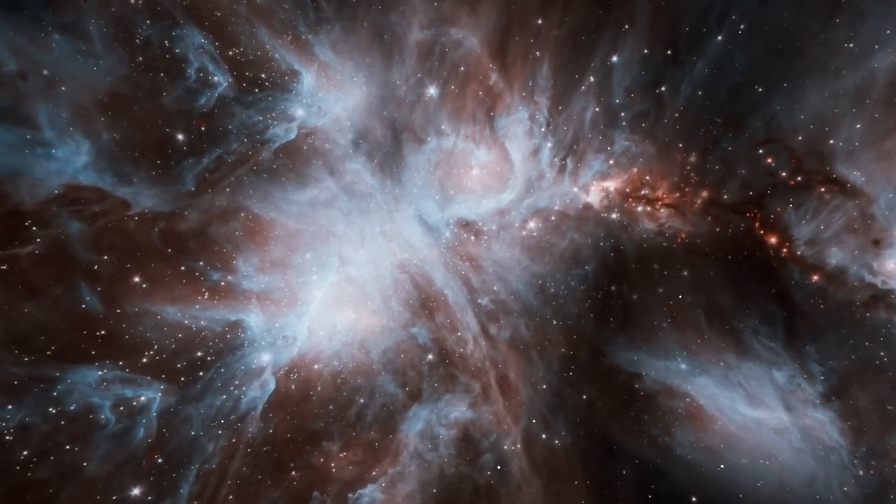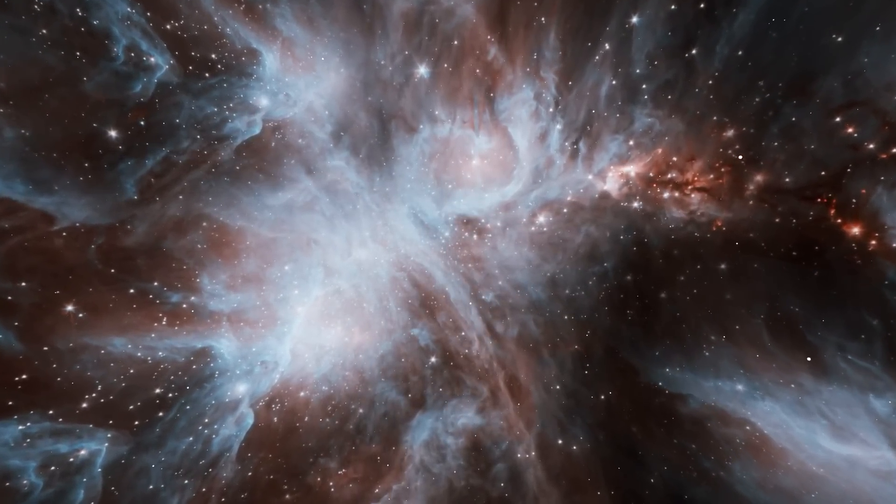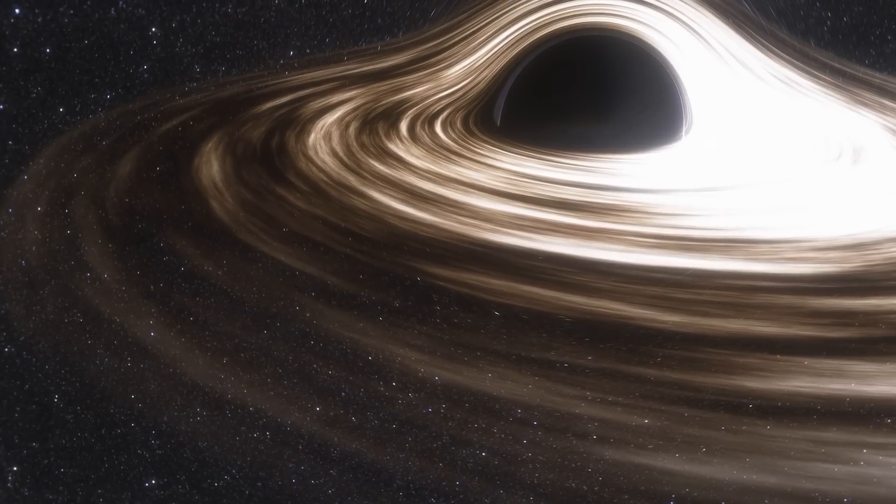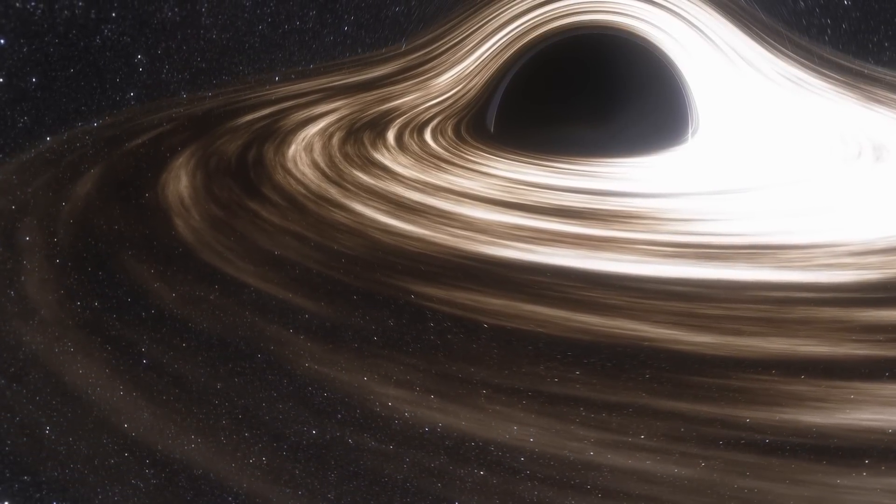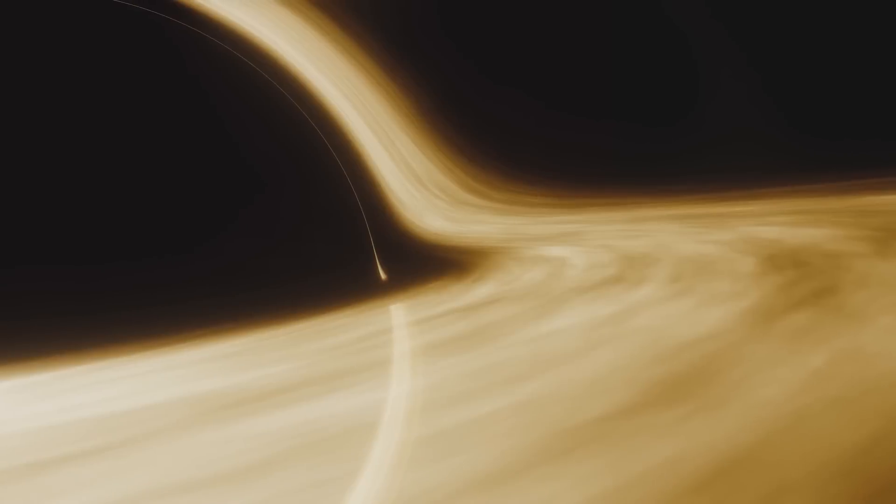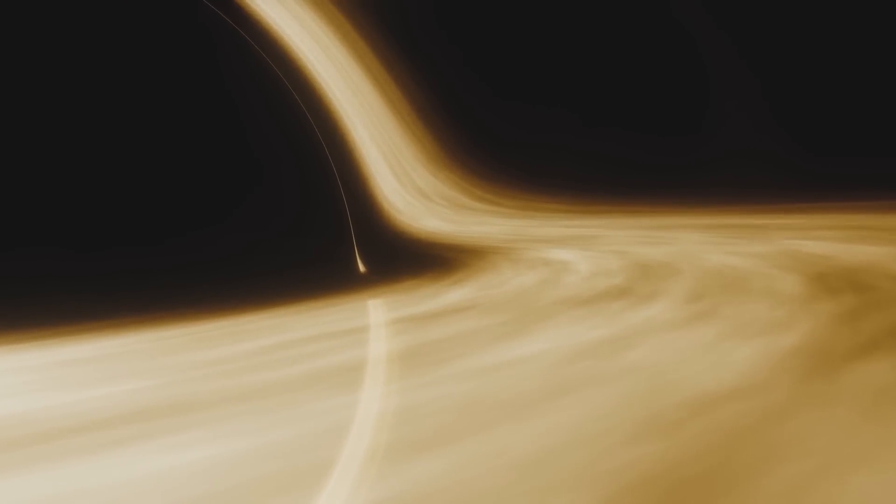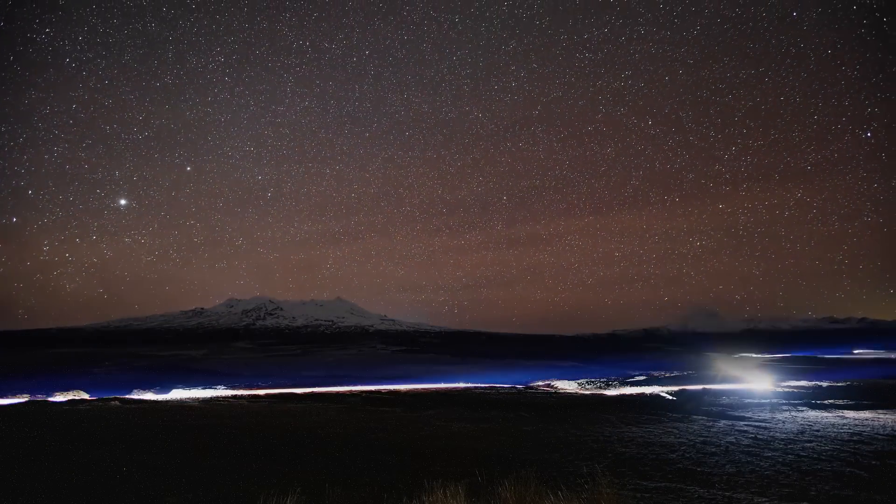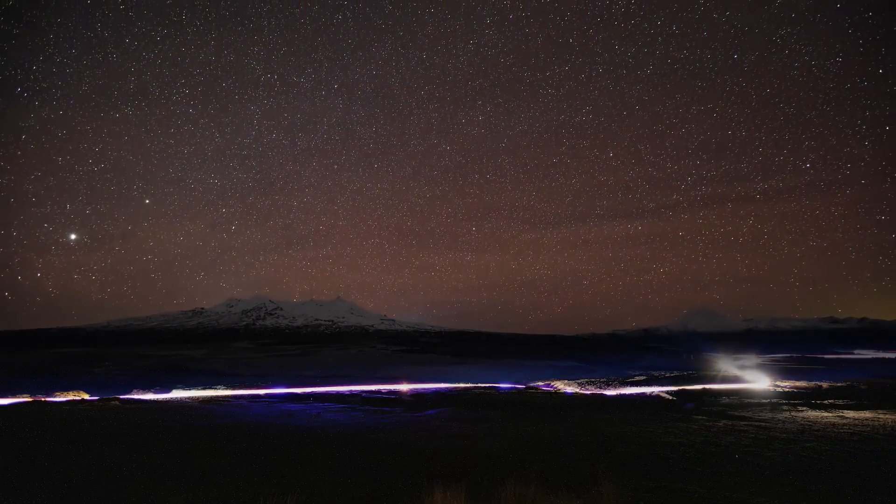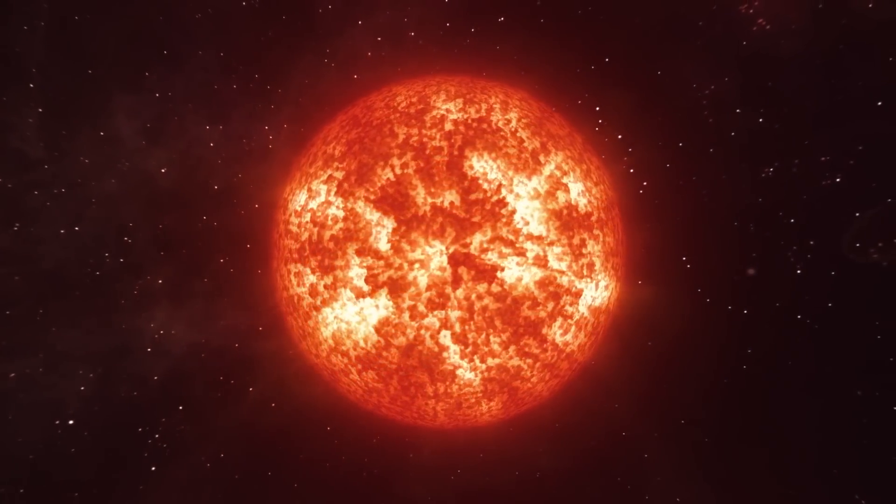Researchers have proposed two new theories to explain the high energy output of ancient galaxies. One theory is that they could have a supermassive black hole at their center that is 100 million times as massive as the Sun. This would be the oldest black hole of this size yet discovered. HD1 and other very old galaxies, on the other hand, could be home to some of the universe's first stars, which are completely different from what scientists have previously imagined.